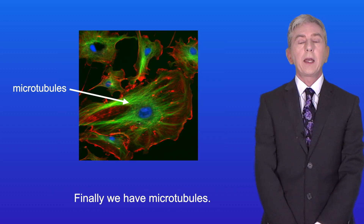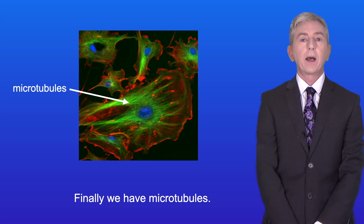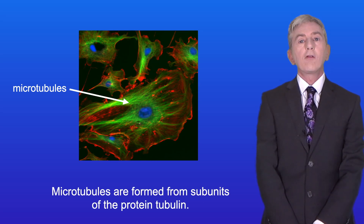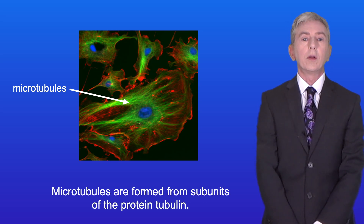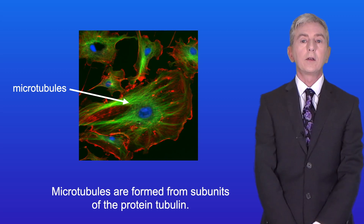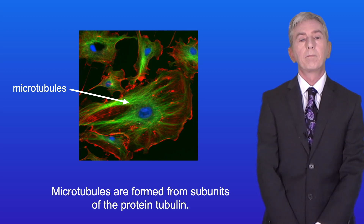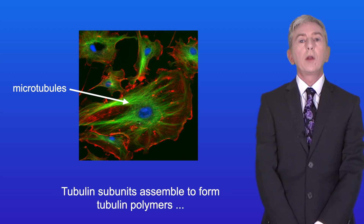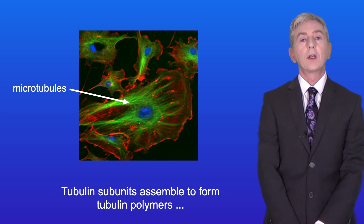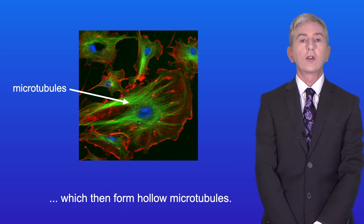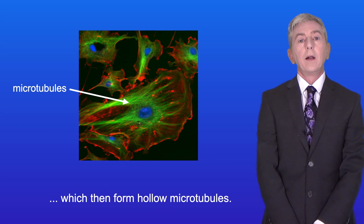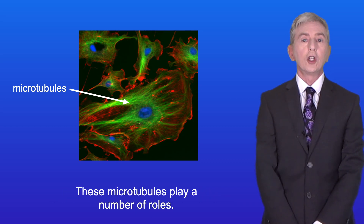Finally we have microtubules. Microtubules are formed from subunits of the protein tubulin. Tubulin subunits assemble to form tubulin polymers, which then form hollow microtubules, and these microtubules play a number of roles.